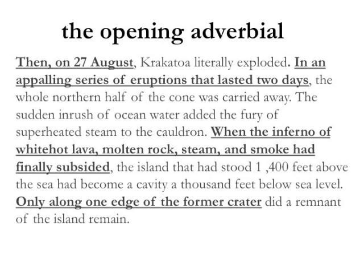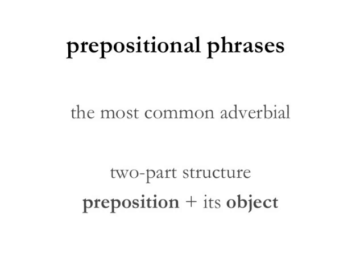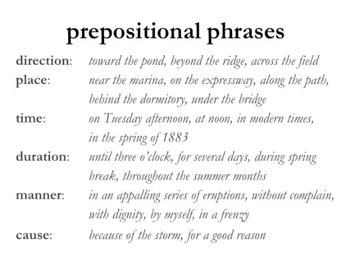There really are numerous options for adverbial phrases. I'm going to walk through some of them, beginning with the prepositional phrase. The prepositional phrase is the most common adverbial. It's a two-part structure built around a preposition and its object. Remember that prepositions are words that orient us toward something. There are prepositions of direction, like toward, beyond, and across. If you put these in connection with a noun phrase — its object — we get prepositional phrases: toward the pond, beyond the ridge, across the field. The categories fit with the types of adverbs: place, time, duration, manner, cause. Examples: up to the ground, near the marina, on Tuesday afternoon, until 3 o'clock, in an appalling series of eruptions, because of the storm. These give additional information about the verb — the chief action of the sentence.